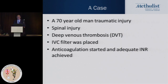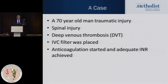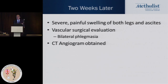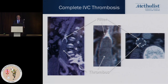You've got a 70-year-old man who had a traumatic injury, spinal injury, and developed a deep vein thrombosis. An IVC filter was placed, anticoagulation was started, and an adequate INR was achieved. Two weeks later, he had severe painful swelling of both legs and ascites, and a vascular surgical evaluation revealed bilateral phlegmasia, and a CT angiogram was obtained which showed that he had complete thrombosis of his IVC.